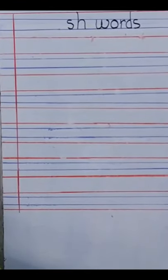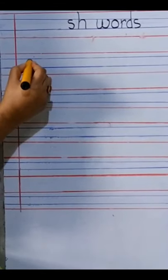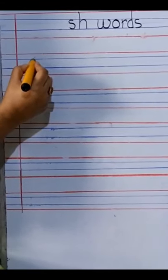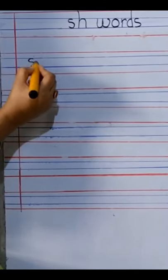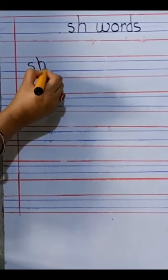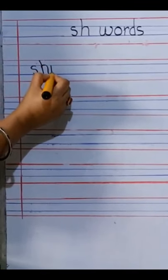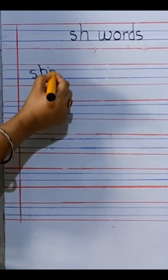The first word we are going to write is ship. SH sound is SH. SH. And then I and P. S. H. I. Put a dot and P. Ship.